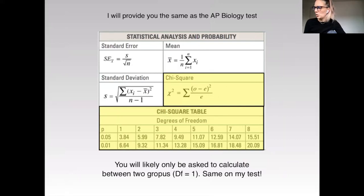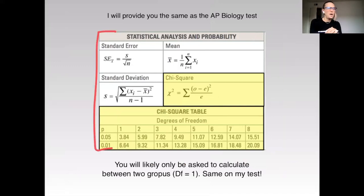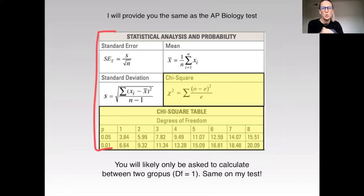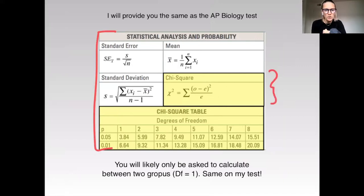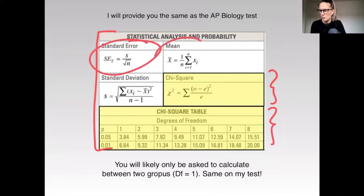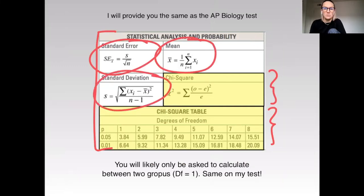This is what I'm going to provide you on a test, and they're 100% clear. Here is what I will provide you on my test, which is the same as what AP Bio provides you. You're going to have the equation and you're going to have this degrees of freedom chart. You also get standard error measure, mean, and standard deviation, which we're not going to really talk about today.